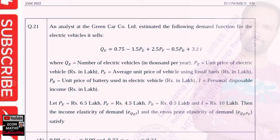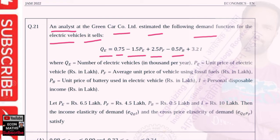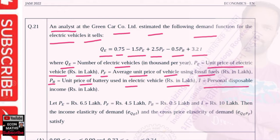Let us solve a question from the JM Economics paper of 2022. An analyst at Green Car Store Limited estimated the following demand for electric vehicles: Qe = 0.75 minus 1.5Pe plus 2.5Pf minus 0.5Pb plus 3.2I. Here Qe denotes the number of electric vehicles in thousands per year, Pe is the unit price of electric vehicles in legs, Pf is the average unit price of fossil fuel vehicles, Pb is the unit price of battery used electric vehicles, and I denotes personal disposable income. The given values are: Pe = 6.5 legs, Pf = 4.5 legs, Pb = 0.5 legs, and I = 10 legs.